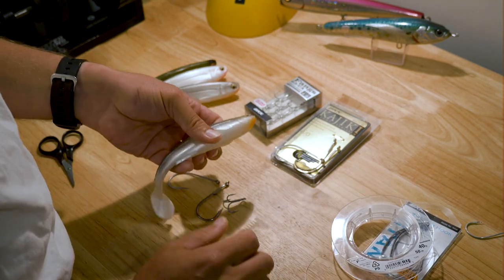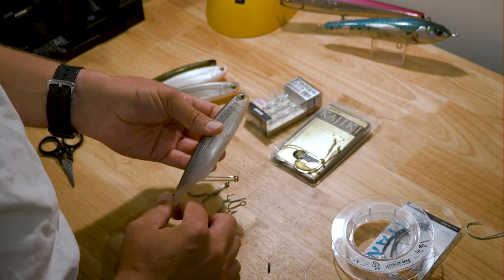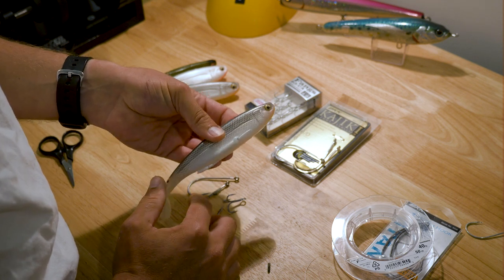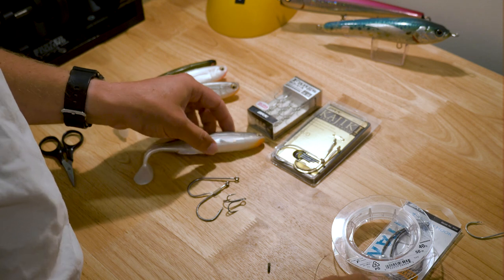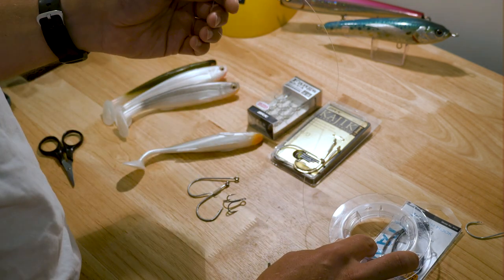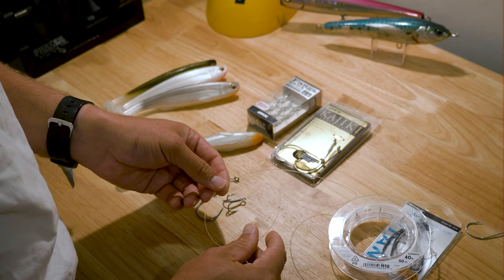I have tried wire and that sort of thing but it just makes the bait too stiff and you lose a bit of action. Sometimes they don't even swim properly so I've found actually just using mono or fluorocarbon for the stinger is the way to go.